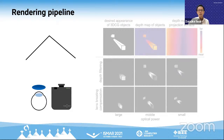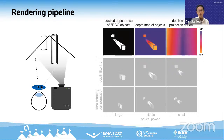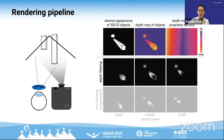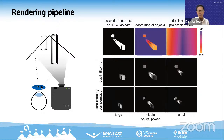We propose a lens breathing compensation technique. We set the target virtual image from the observer's point of view and compute the corresponding projection image. Then we consider this target virtual image from the ETL's point of view — the projected image is transformed. We found this transformation can be formulated as a simple scaling with respect to the optical axis. We compute the scaling factor from this model and scale the projection image to compensate for the lens breathing artifact.